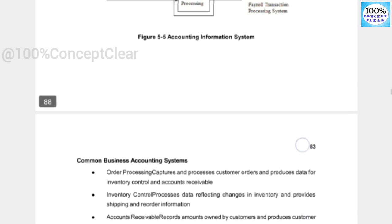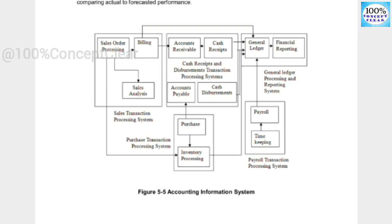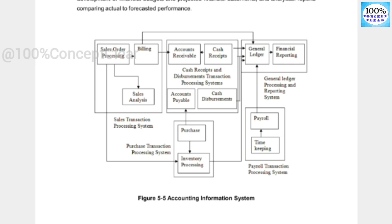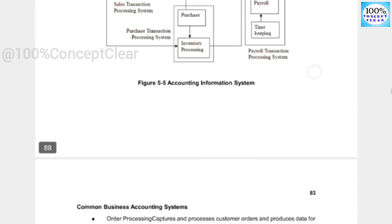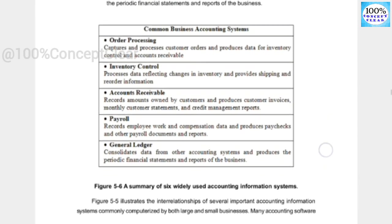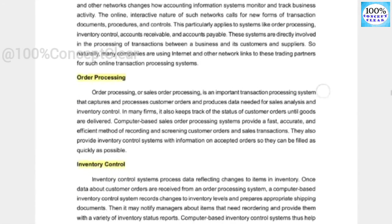The chart shows the flow: sales order processing, then cash receipts, then purchase and inventory processing system where cash is paid, then cash receivables and payables — the cash receipts and disbursement transaction processing system. Next level produces the general ledger for the firm, and payroll salaries feed into the general ledger as well. This is the overall accounting information system with its six components.